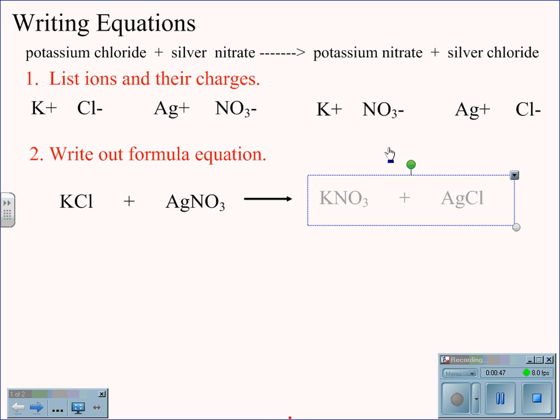This will yield a product of KNO3, potassium is plus one and nitrate is minus one, a one-to-one ratio, and silver and chlorine go together in a one-to-one ratio to make silver chloride, AgCl.